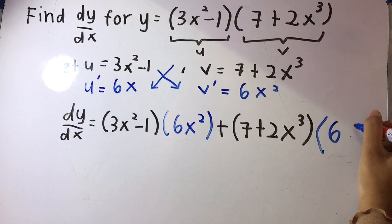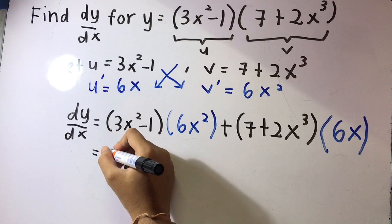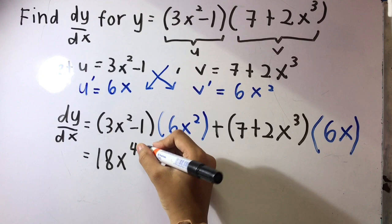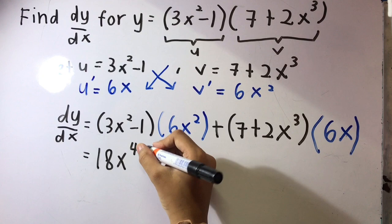times 6x. This equals 18x⁴ - 6x² + 42x + 12x⁴.